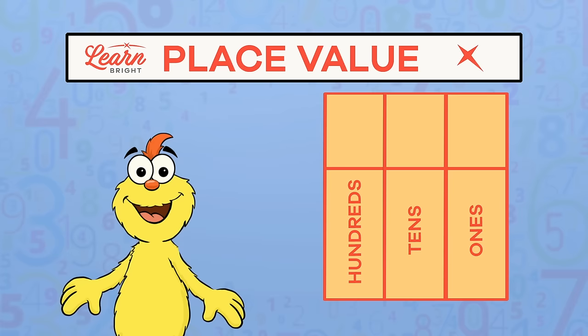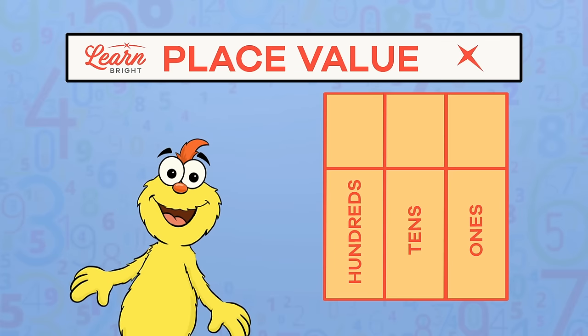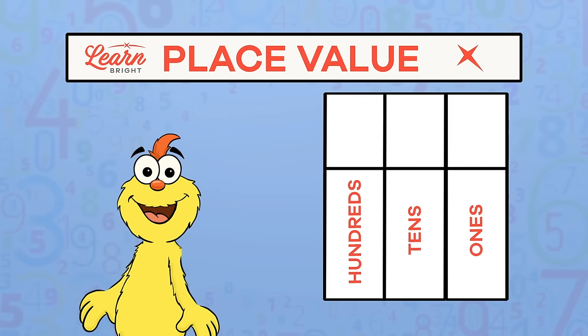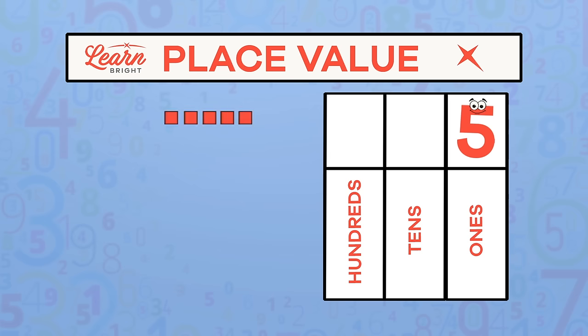This chart represents the values: ones, tens, and hundreds. It's important to learn the value of each digit in a number. For example, the number 5 in the ones place has a value of 5.